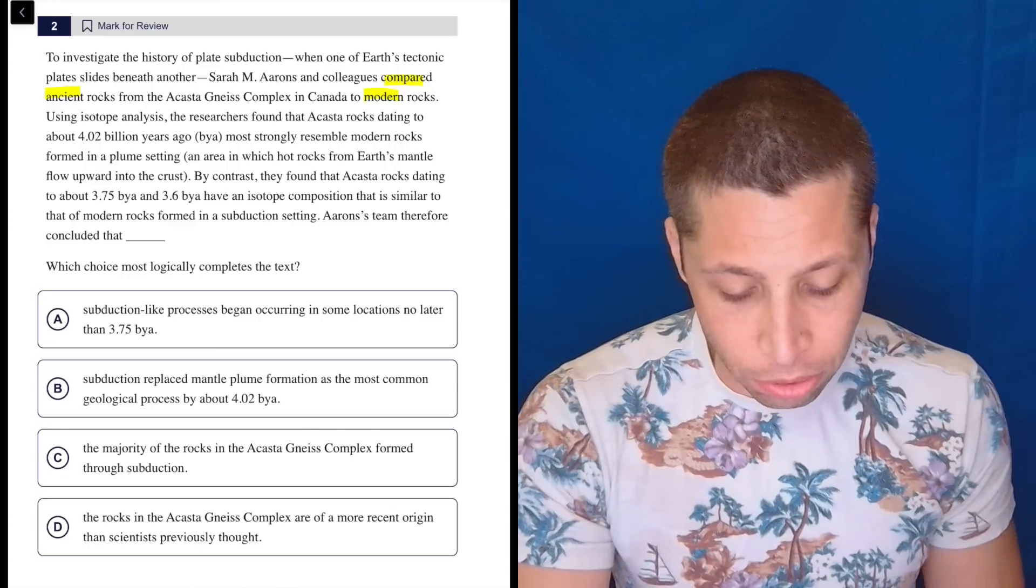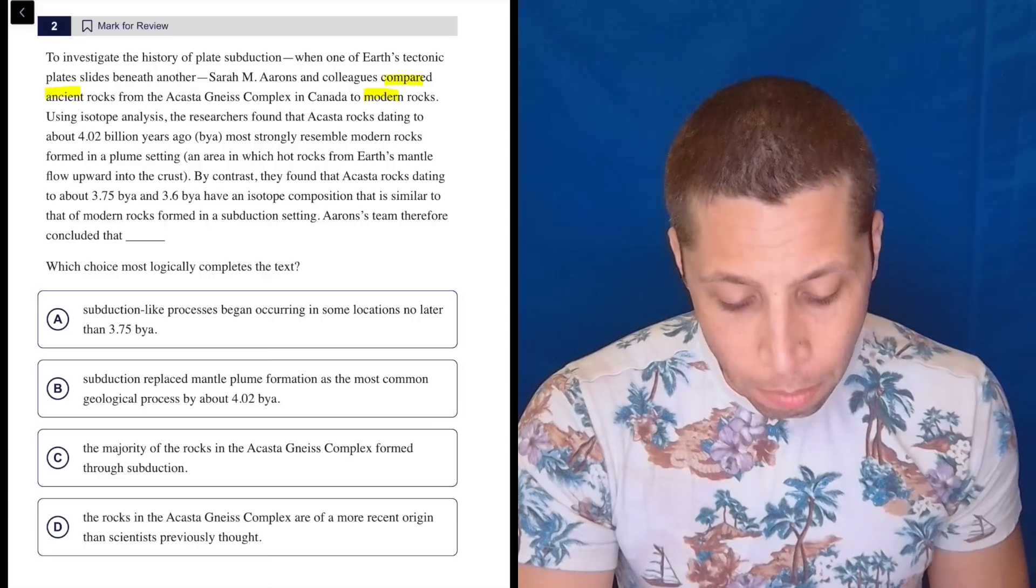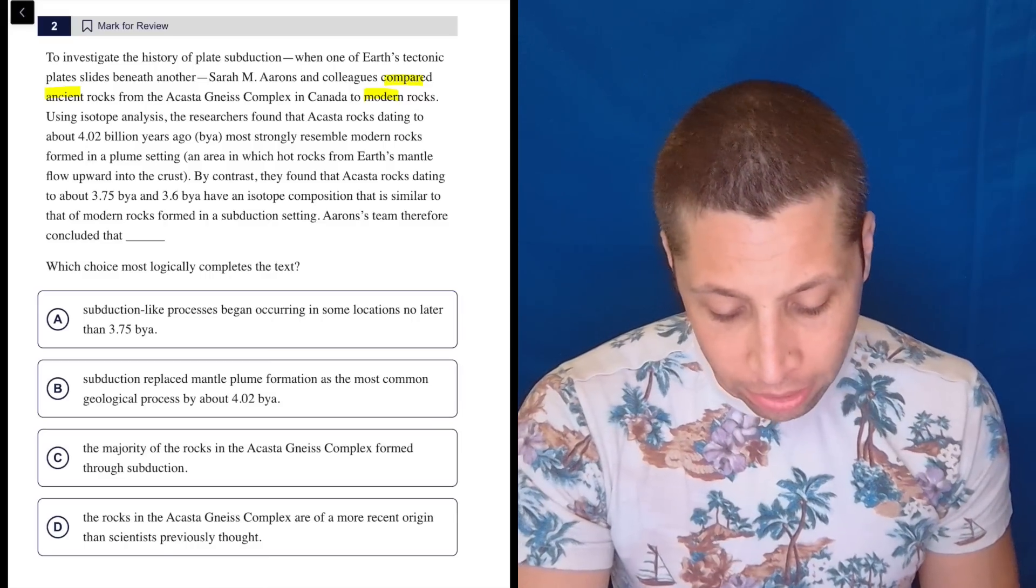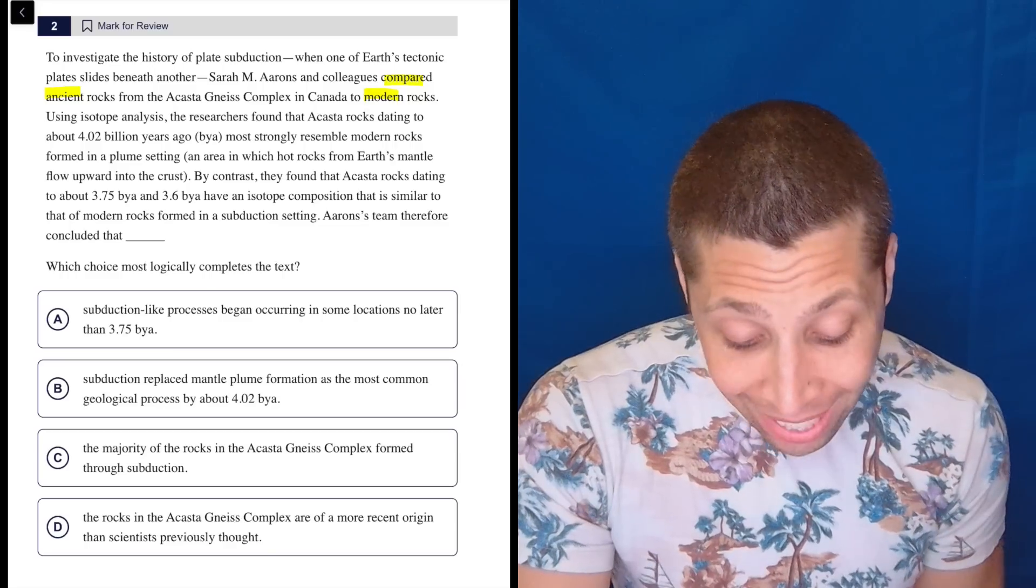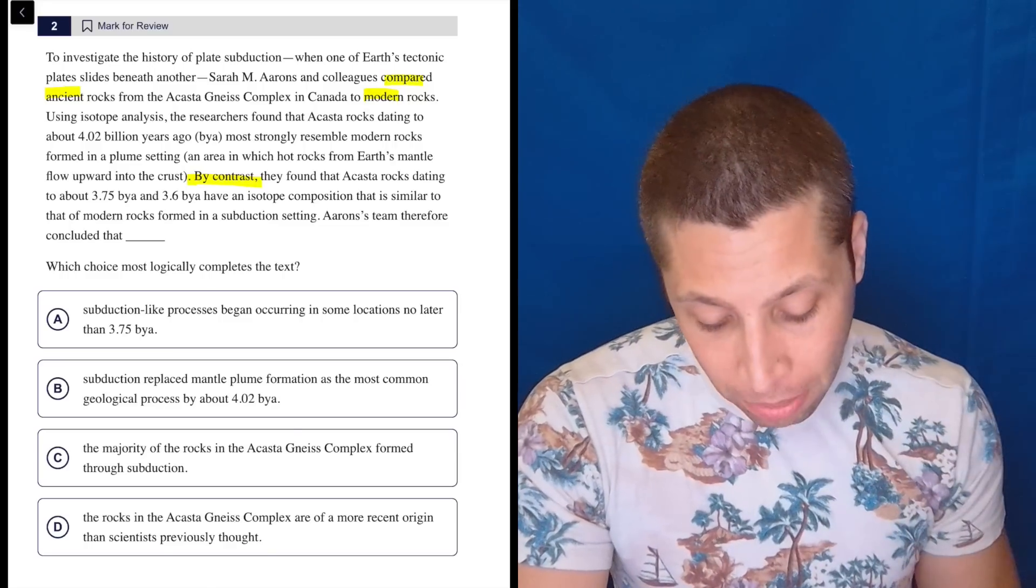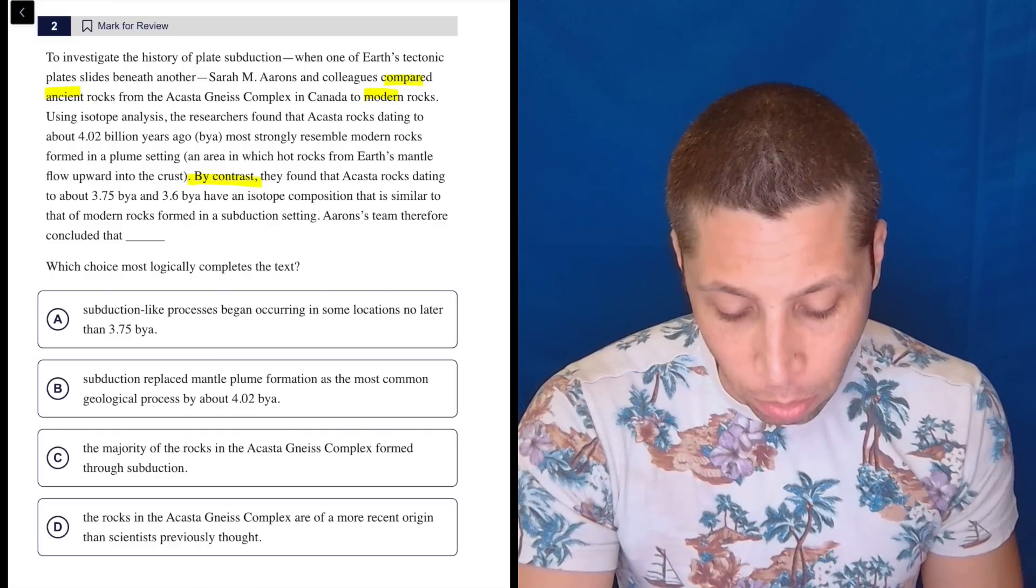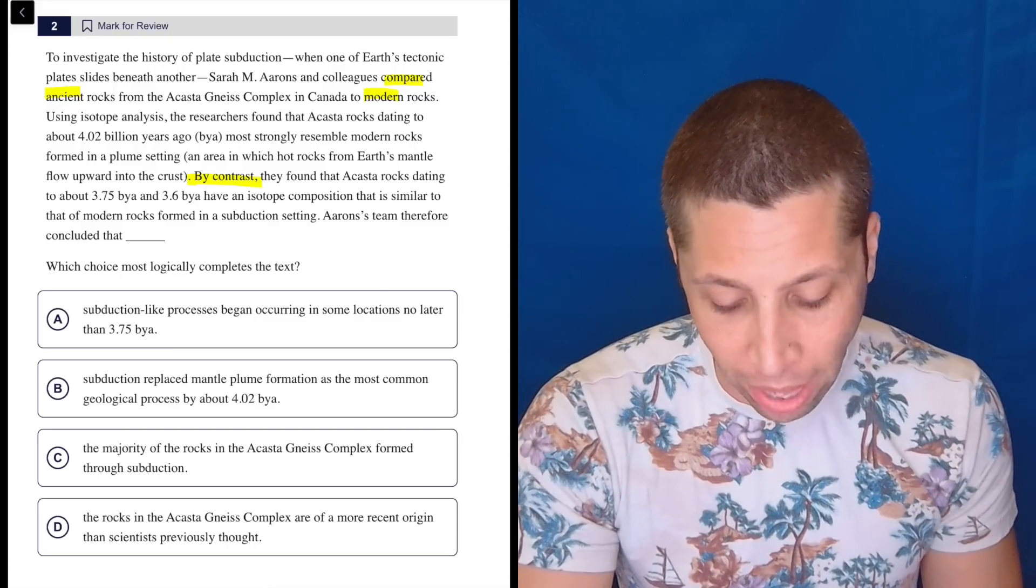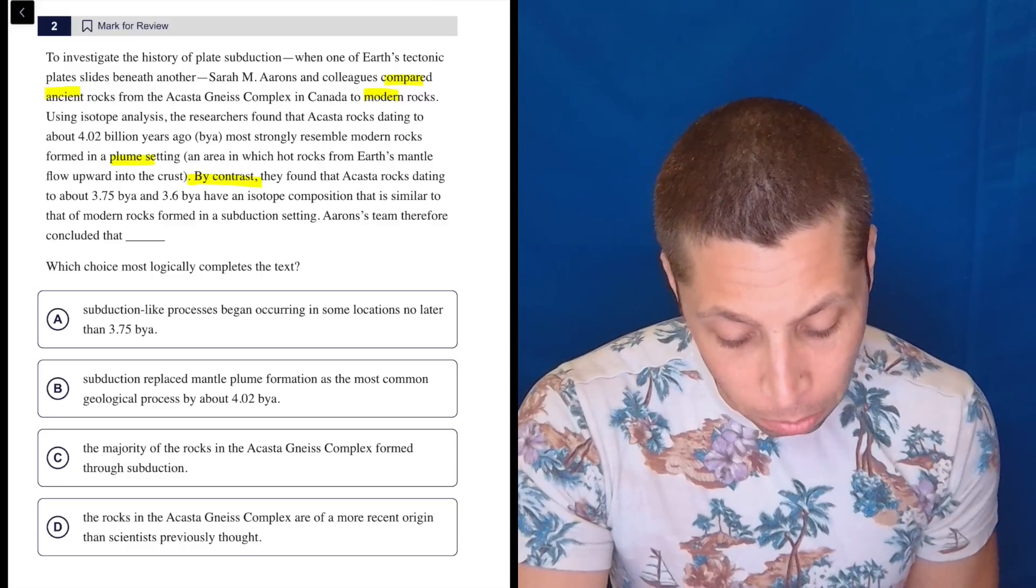Using isotope analysis, the researchers found that Acosta rocks dating to about 4.02 billion years ago most strongly resemble modern rocks formed in a plume setting, an area in which hot rocks from Earth's mantle flow upward into the crust. By contrast, most important word in the passage is 'but', they found that Acosta rocks dating to about 3.75 billion years ago and 3.6 billion years ago have an isotope composition that is similar to that of modern rocks formed in a subduction setting. So some are a plume, some are subduction.